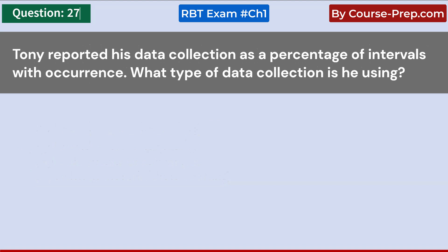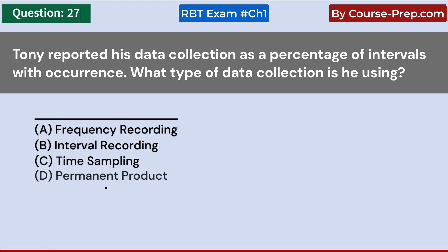Tony reported his data collection as a percentage of intervals with occurrence. What type of data collection is he using? A. Frequency recording. B. Interval recording. C. Time sampling. D. Permanent product. Answer B: Interval recording.